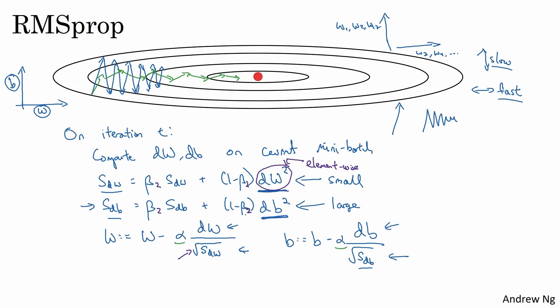And also to make sure that your algorithm doesn't divide by zero, what if square root of sdW is very close to zero? Then this thing could blow up just to ensure numerical stability.